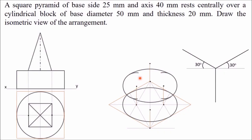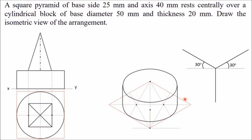Now join the two ellipses with vertical tangent lines — lines that are tangent to both ellipses. This line is tangent to both ellipses, and similarly this other line is tangent to both. In this way you have completed the cylindrical part. The inner hidden portions are not visible, so erase those parts, and now you have the complete cylinder in isometric view.